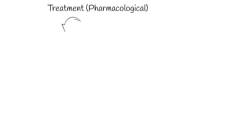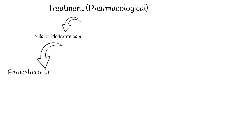Pharmacological treatment: Acetaminophen and oral non-steroidal anti-inflammatory drugs are the most popular and affordable options for osteoarthritis and are usually the initial choice of pharmacologic treatment. The pain medication paracetamol (acetaminophen) is the first-line treatment. Anti-inflammatory drugs should initially be started as needed rather than scheduled.